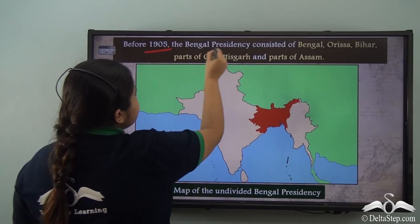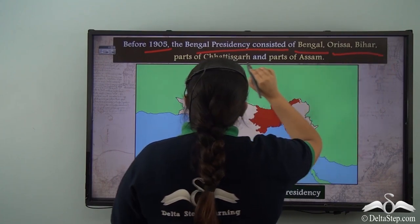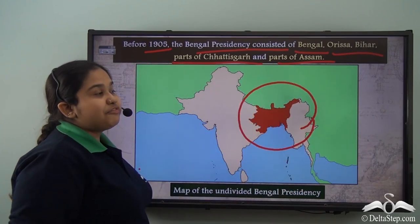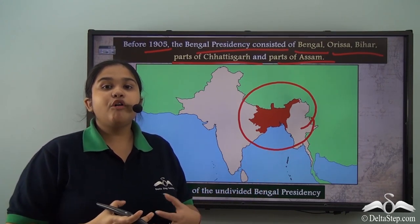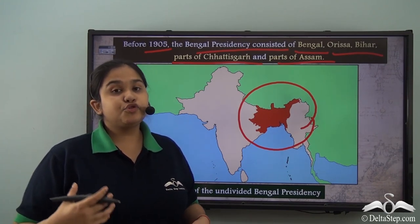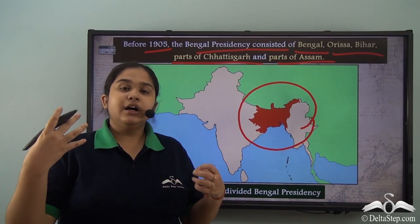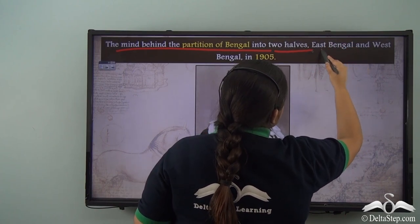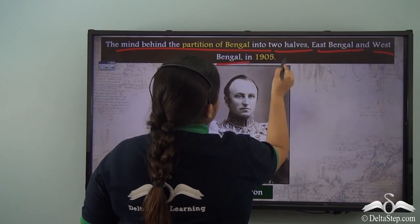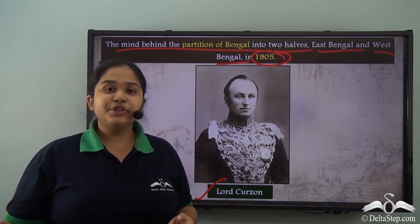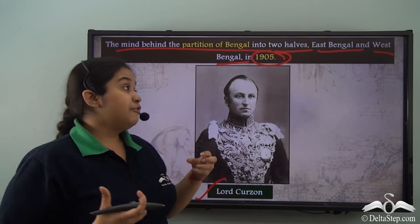Before 1905, the Bengal presidency consisted of Bengal, Odisha, Bihar, parts of Chhattisgarh, and parts of Assam — one of the largest presidencies. Lord Curzon gave the administrative difficulty of managing such a vast area as the stated reason for the call for partition, dividing it into two halves of East Bengal and West Bengal in 1905. However, the actual administrative inefficiency cited was not the real reason.